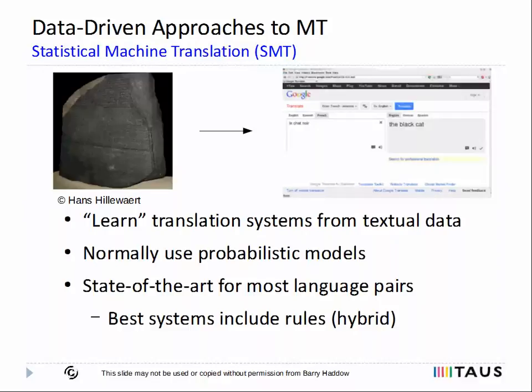Statistical MT systems are trained by converting a text into a probabilistic model, so that finding the best translation is equivalent to finding the most probable translation. And this slide shows a typical text, for example, the Rosetta Stone, producing a translation system, in this case, Google Translate. Today, statistical MT systems are state-of-the-art for most translation scenarios. Although it has to be noted that the very best systems often include some rule-based elements, for example, to deal with dates or numbers, or to deal with morphology. And such systems are sometimes known as hybrid systems.